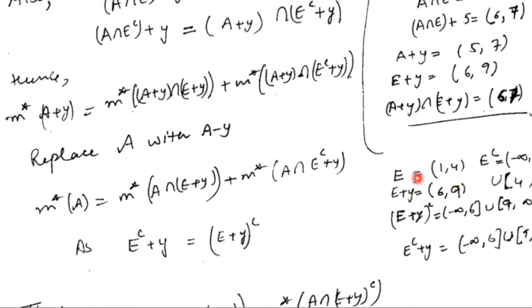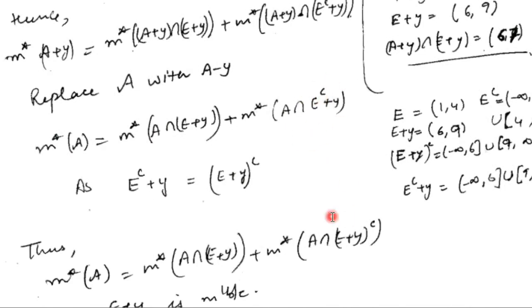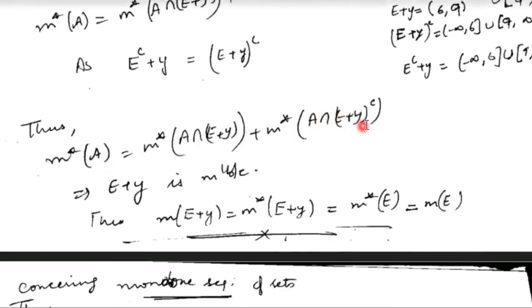For example, with E = (1, 4) and y = 5: E plus y = (6, 9), E complement = (-∞, 1) ∪ (4, ∞), so E complement plus y = (-∞, 6) ∪ (9, ∞), which equals (E plus y) whole complement. So we replace E complement plus y with (E plus y) complement, and replace A with A minus y, giving: outer measure of A = outer measure of A intersection (E plus y) plus outer measure of A intersection (E plus y) complement.